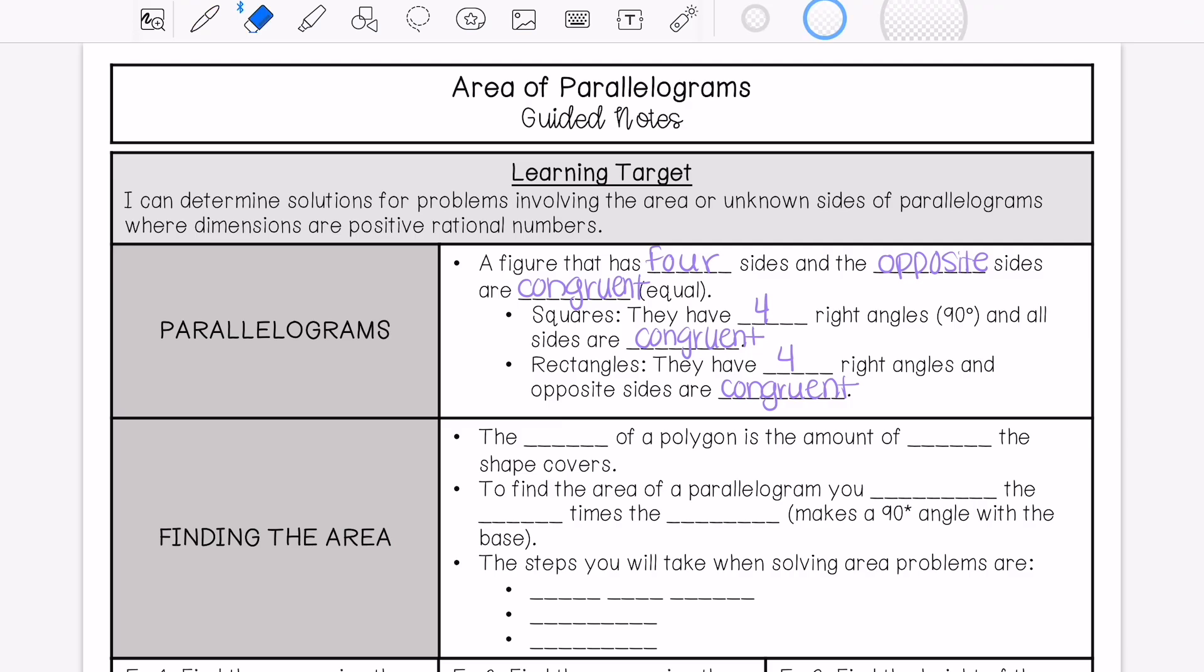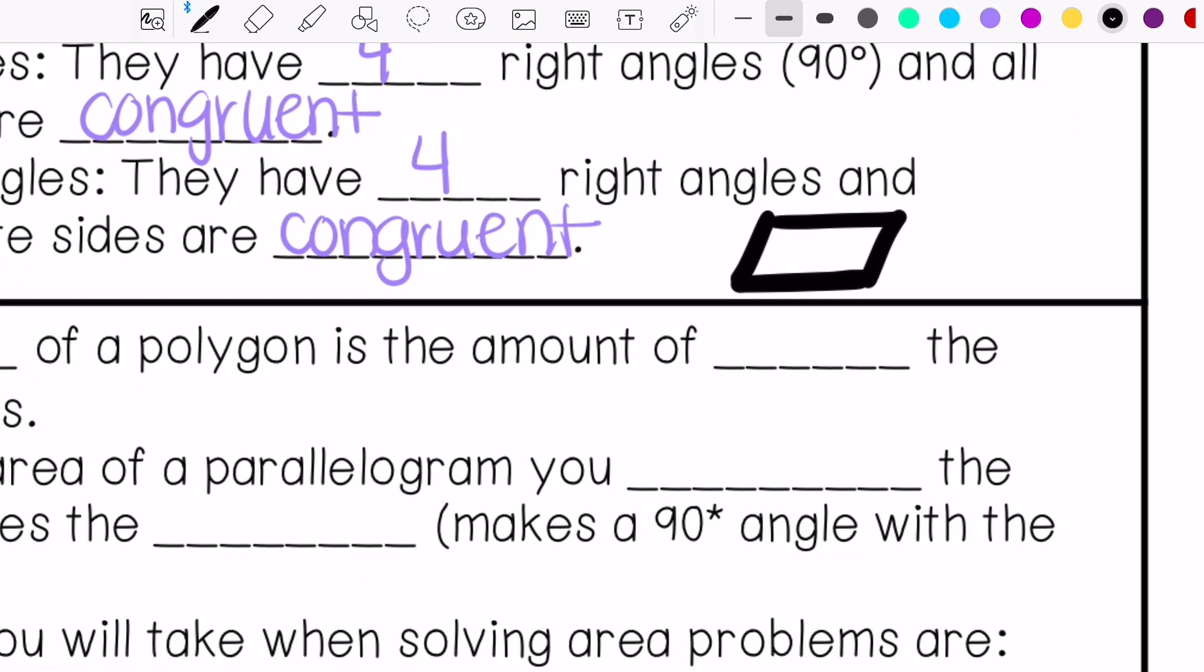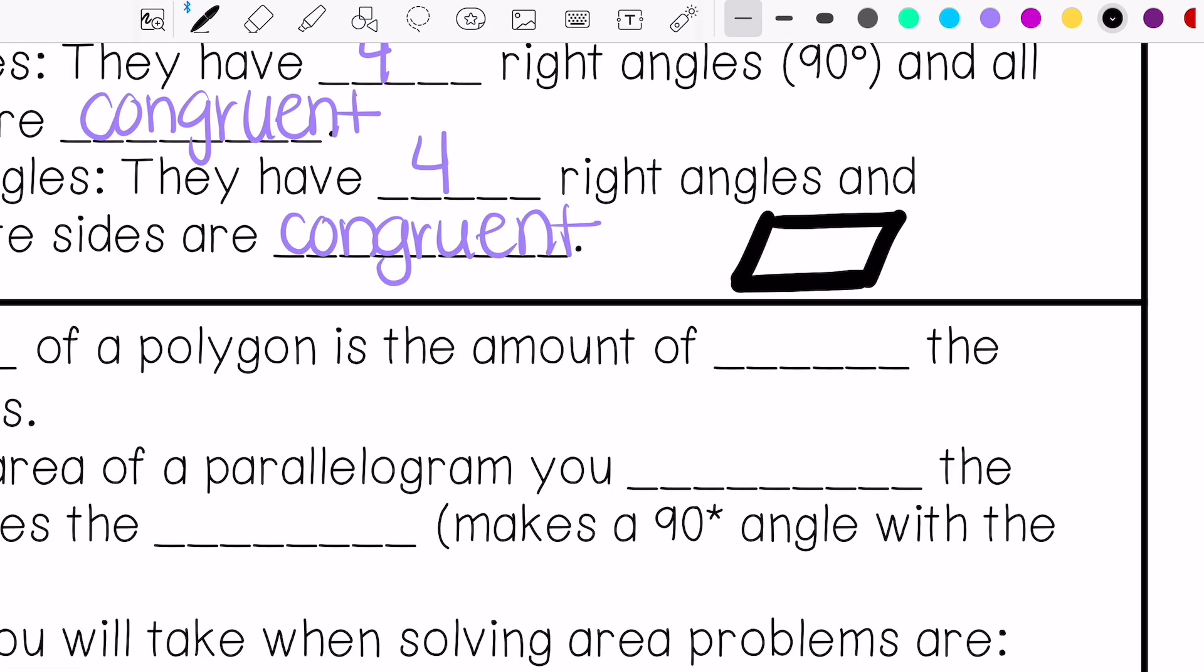And then you also have parallelograms that would look like this. It's just called a parallelogram, and when you're finding the height of a parallelogram that looks like this, your height's going to look like this, because your height needs to create a right angle. So you're going to have like a dotted line and then some number right here.